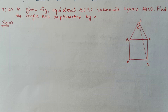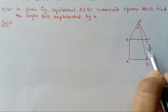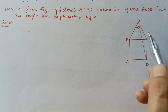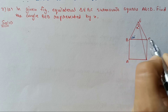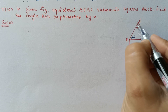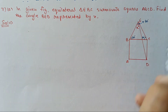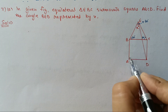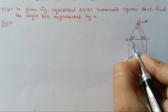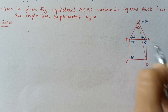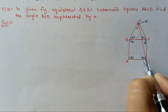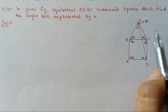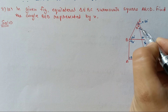Next, question number 7A. In the given figure, equilateral triangle EBC surmounts square ABCD. Find angle BED represented by X. The equilateral triangle means all three angles are 60 degrees. Square ABCD means all interior angles are 90 degrees. We need to find angle BED, and if we call angle CED as Y, then X plus Y equals 60 degrees.